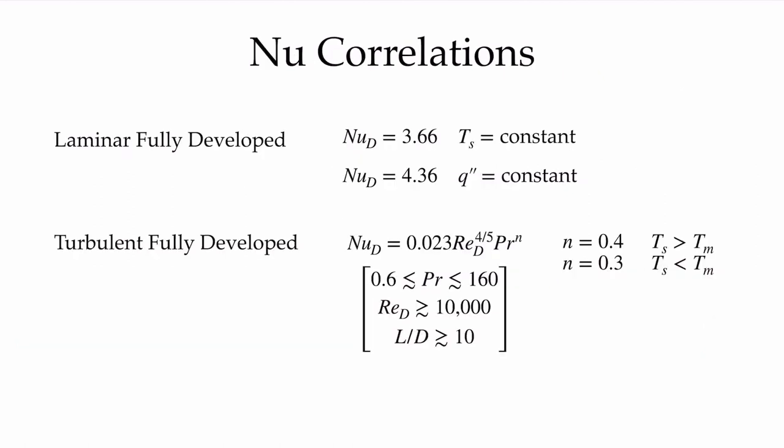To apply these expressions we need average convection coefficients from Nusselt number correlations. As expected, in fully developed laminar flow the Nusselt number is a constant. For constant surface temperature it is Nu = 3.66; for constant heat flux it is Nu = 4.36. Other geometries like square or rectangular channels have different values. For turbulent flow, the Nusselt number takes the standard form as a function of Reynolds and Prandtl numbers — but since fluid properties and velocity are constant along the pipe, Reynolds number is constant and again yields a single Nusselt number value.